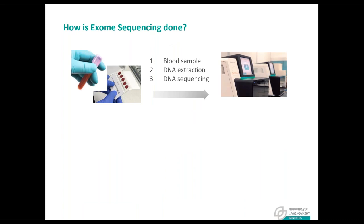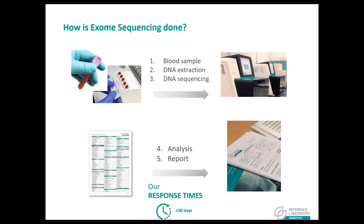We receive the blood sample, which can be sent using our dry blood spot cards — very useful for our international customers. Once the blood sample is received, DNA is extracted and prepared for sequencing. For this analysis, clinical data is essential to be cost-effective. Reference laboratory translates clinical terms into HPO, and we also provide a list of HPO terms from which physicians can select phenotypes. We commit to giving back answers in less than 30 days, although realistically this time can vary depending on the case.